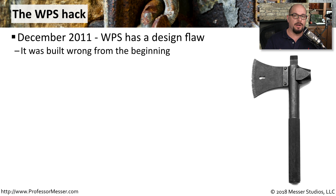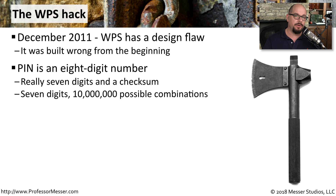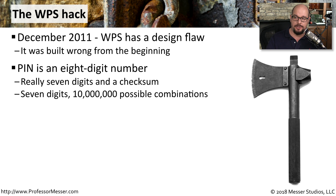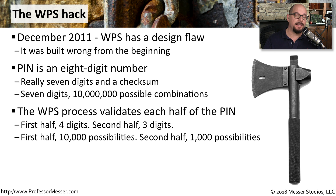Unfortunately, in December of 2011, a significant flaw was found with WPS that had really been part of the design since the very beginning. There is a personal identification number used for authentication with WPS — this is an eight-digit number, but in reality it's a seven-digit number and the last digit is a checksum. That means these seven digits would give you about 10 million possible combinations. However, the WPS validation process actually looked at the first half of the number and then the second half separately.